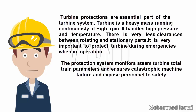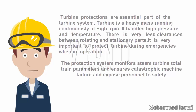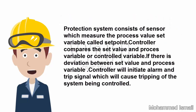It is very important to protect the turbine during emergencies when in operation. The protection system monitors steam turbine total train parameters and ensures against catastrophic machine failure and exposure of personnel to safety hazards. The protection system consists of sensors which measure the process value and a set variable called the set point.